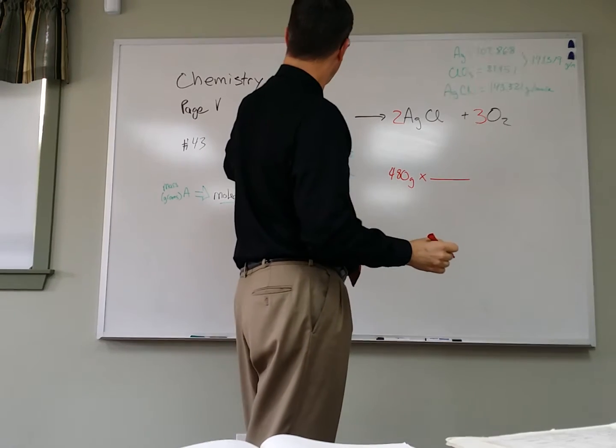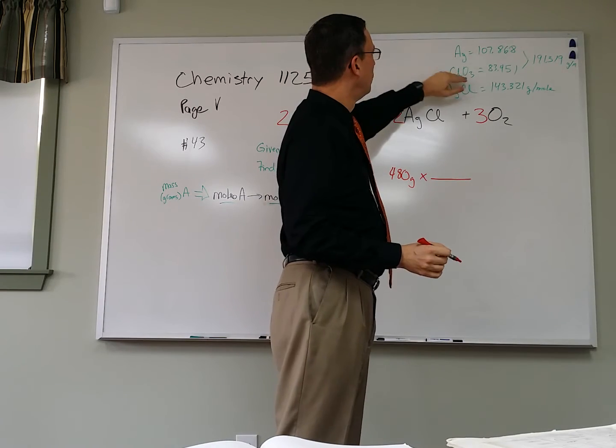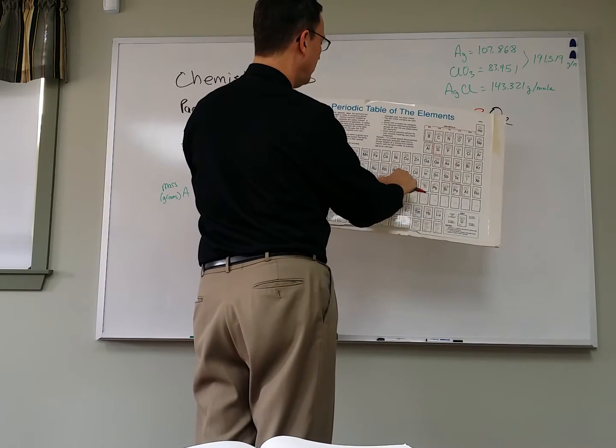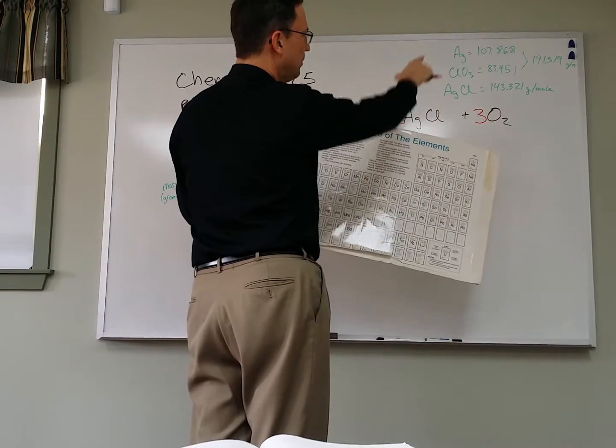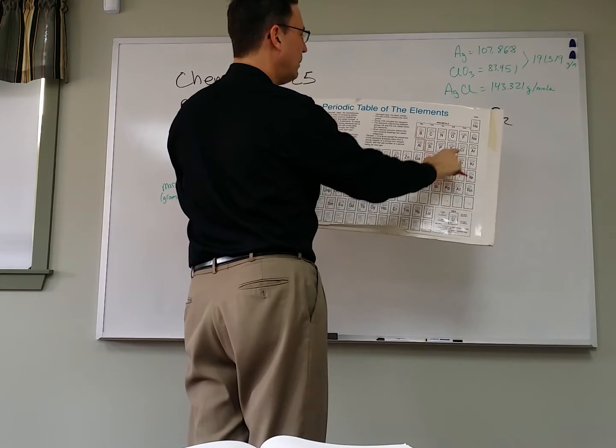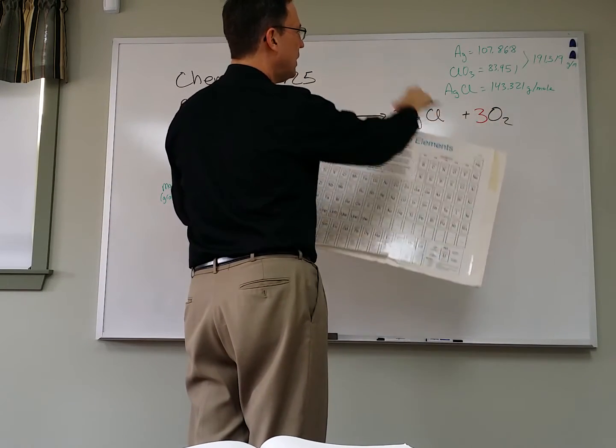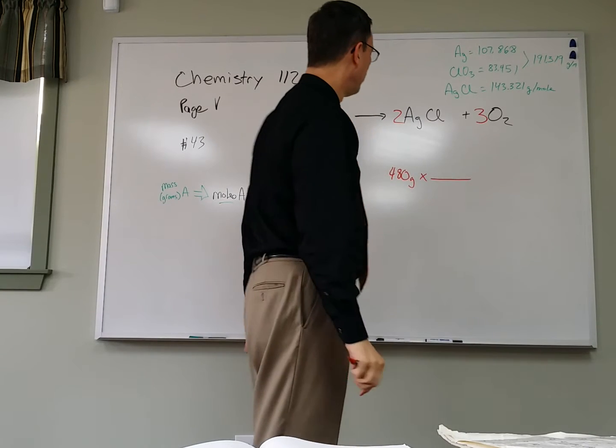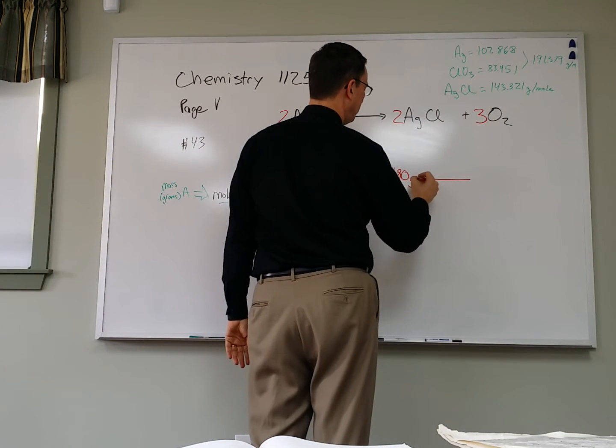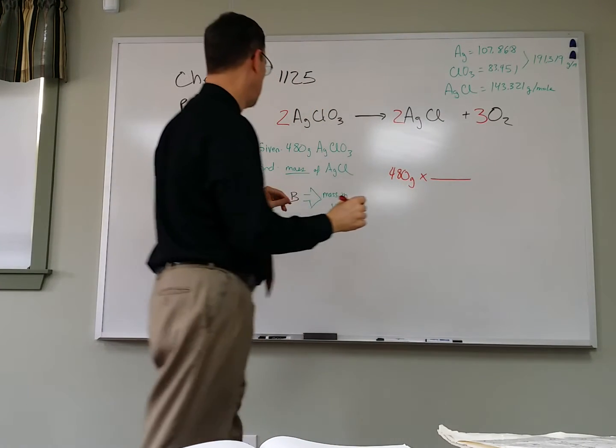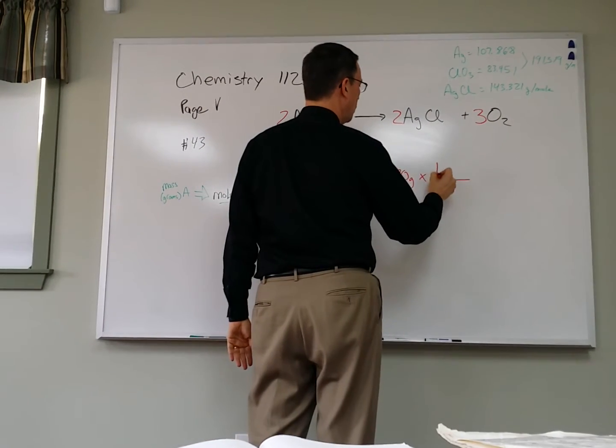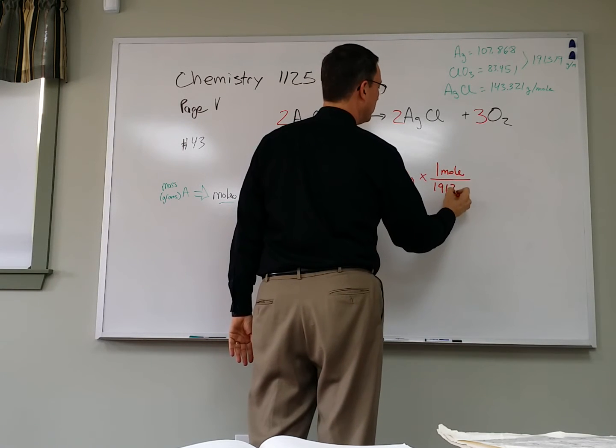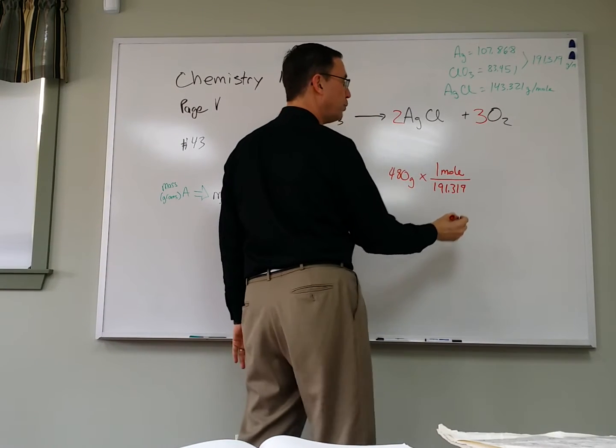Well, I wrote it down up here that AgClO3, if we add from the periodic table. So on here is silver, 107, it's rounded to 0.87 here, 0.868. And then if we grab the chlorine, 35.453, we have 3 oxygen, it's 16 each, we add all that up, we get 191.319. And that is the number of grams in one mole. So we put one mole up here, and down here is 191.319 grams per mole.